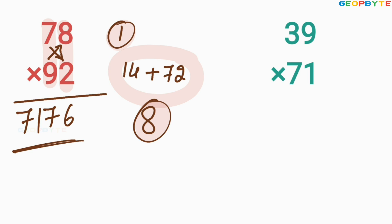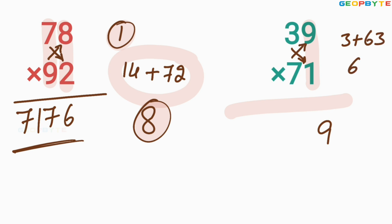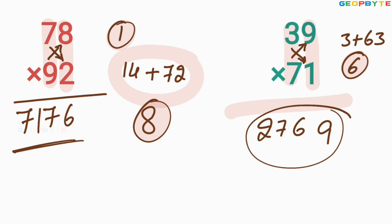Similarly, 39 multiplied by 71. First, multiply 1 and 1 is 1. Cross multiplication: 3 multiplied by 1 is 3, plus 7 multiplied by 9 is 63 — equals 66. Write 6 here, 6 is balance. Then multiply 3 and 7: 21, plus 6 balance is 27. So 2,769 is the value of 39 multiplied by 71.